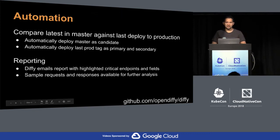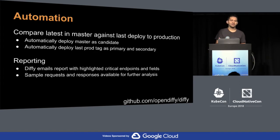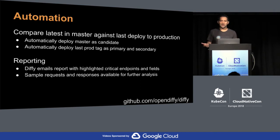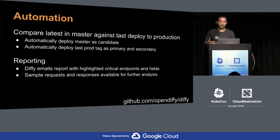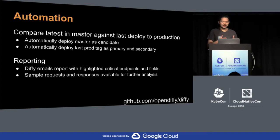The first thing people start working on as soon as they try Diffy out is automating it. When we saw this pattern, we noticed it was a real need. We ended up supporting the use case where you can automatically deploy whatever the last production tag was to primary and secondary, then the latest master as candidate, and run this as an ongoing comparison at whatever cadence you want.